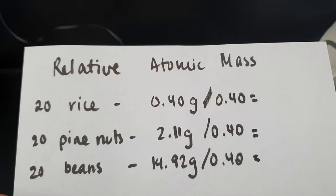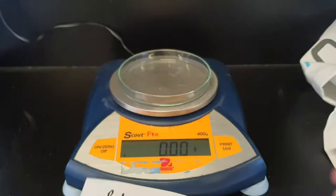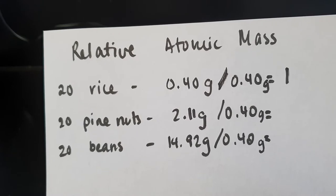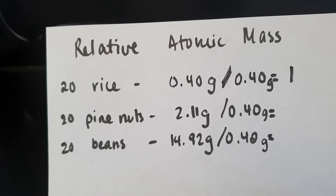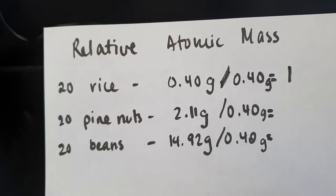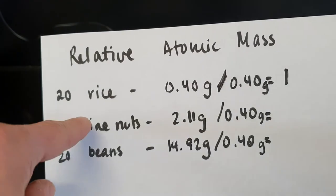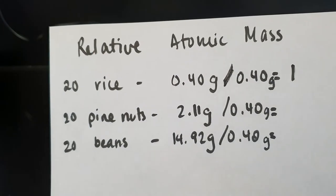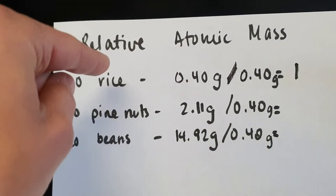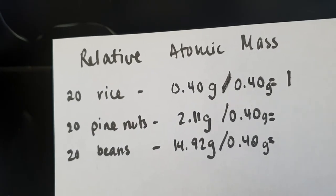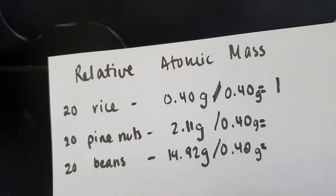So I'm just going to do that math really quickly. In this instance, our relative atomic masses or our relative masses of these structures, they now no longer have a unit because it's a relative mass. It's a number that relates the three substances to the smallest. So what these numbers will represent is the pine nut mass compared to the rice mass and the beans mass compared to the rice mass. So that is our reference point.